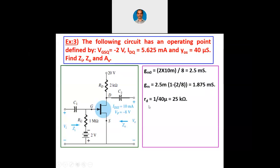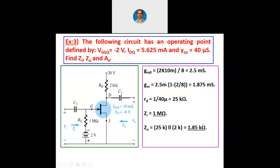Small rd is 1 over 40 microsiemens, which is 25 kilo ohms. Zi is 1 mega ohm directly, since gate to source is considered open circuit and there is no gate current. Z naught is 25 kilo ohms in parallel with 2 kilo ohms, which is around 1.85 kilo ohms. Then Av equals minus gm into Z0, that is minus 1.875 milli into 1.85 kilo, giving approximately minus 3.47.